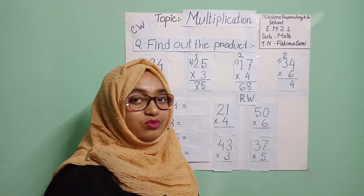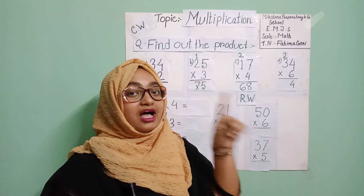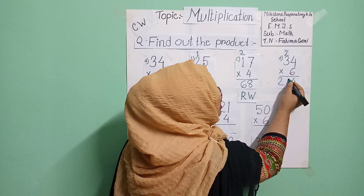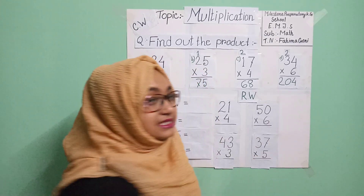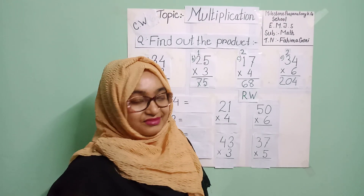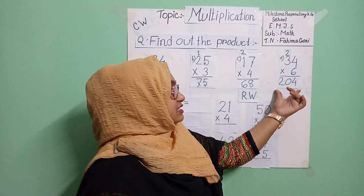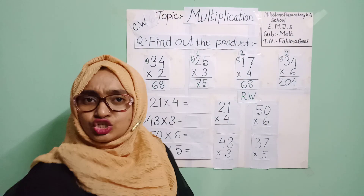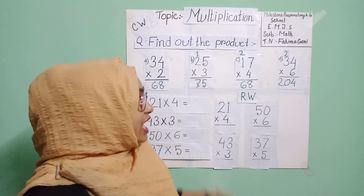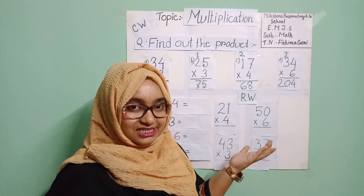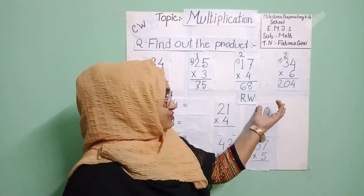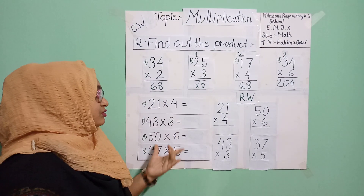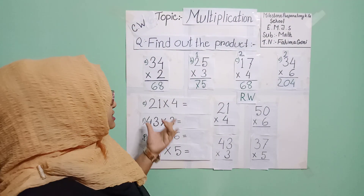Then six threes are eighteen, and eighteen plus two is twenty. So the answer is two hundred and four. Students, in the hundreds place you can also get the product in multiplication — don't be scared of that. You can write it right there, no problem. Now we are starting the side-by-side method.